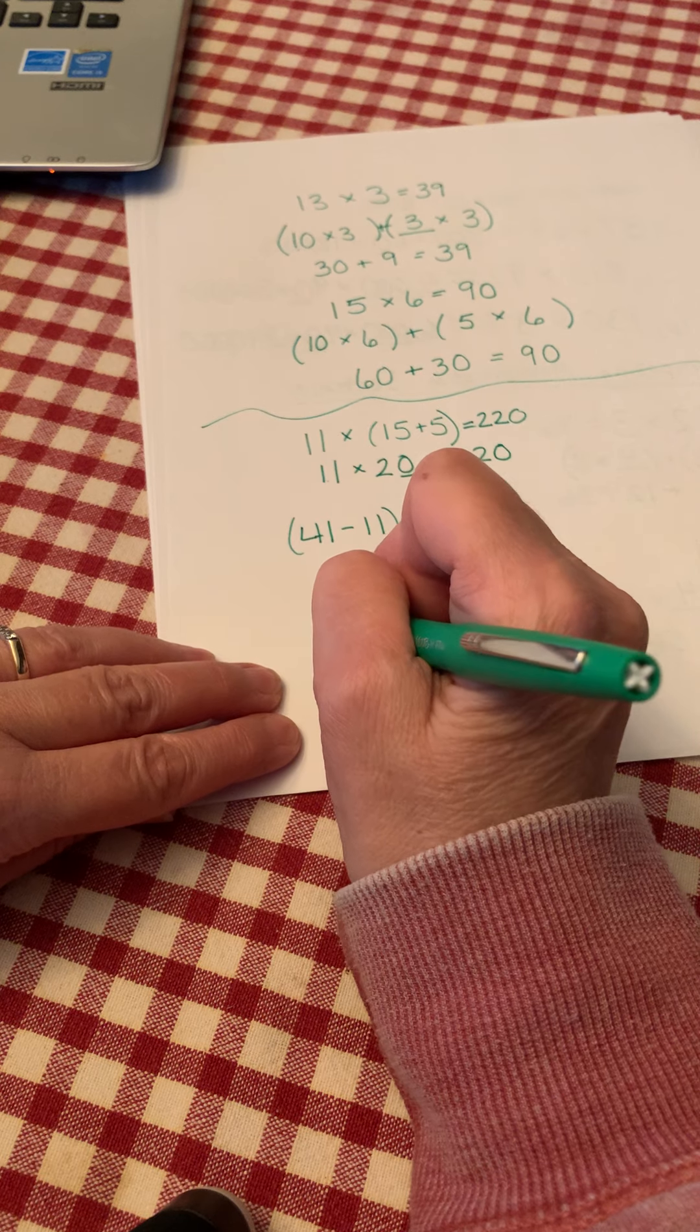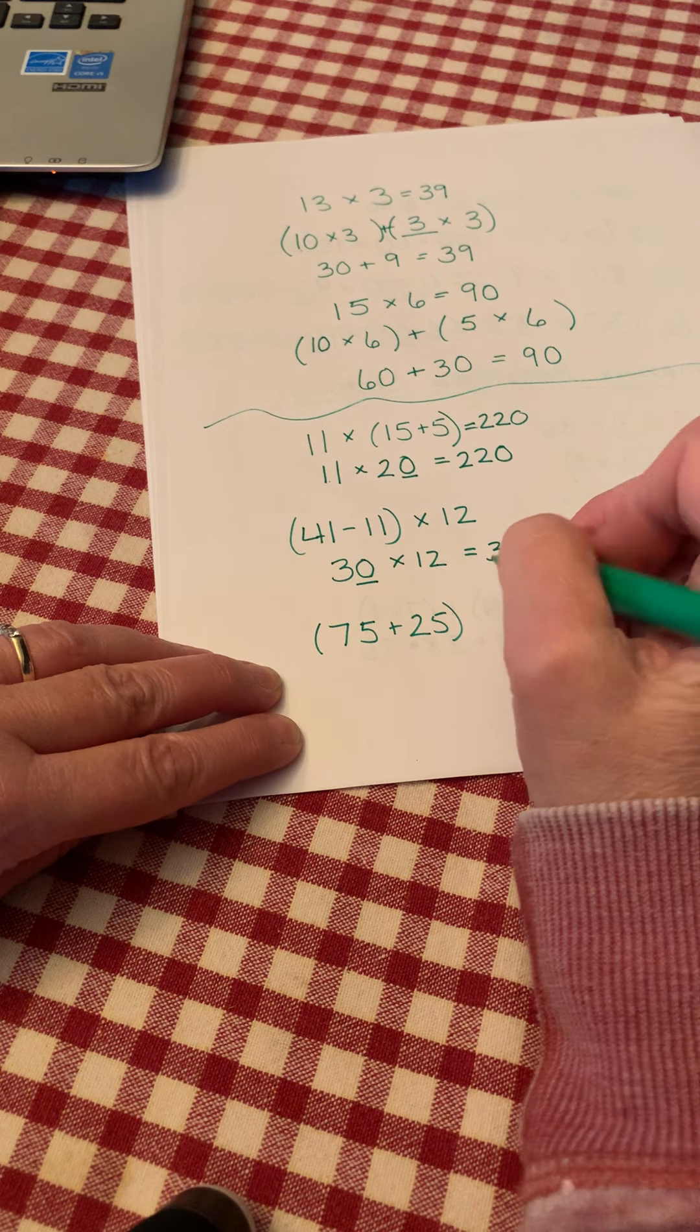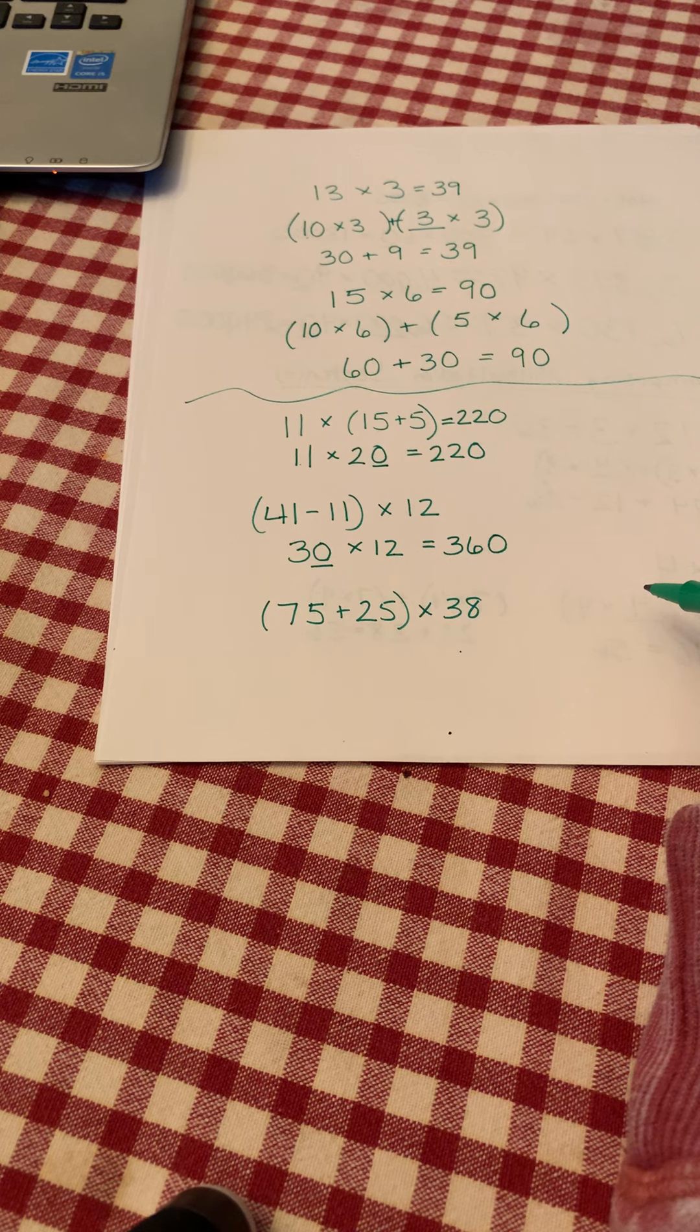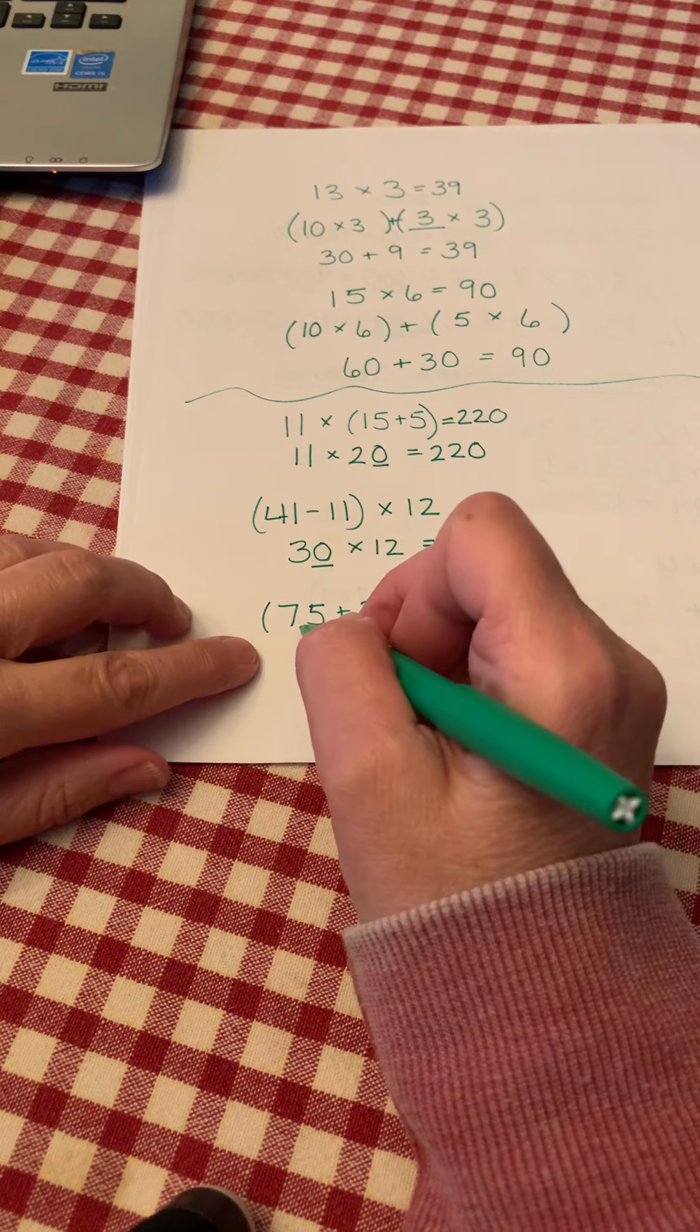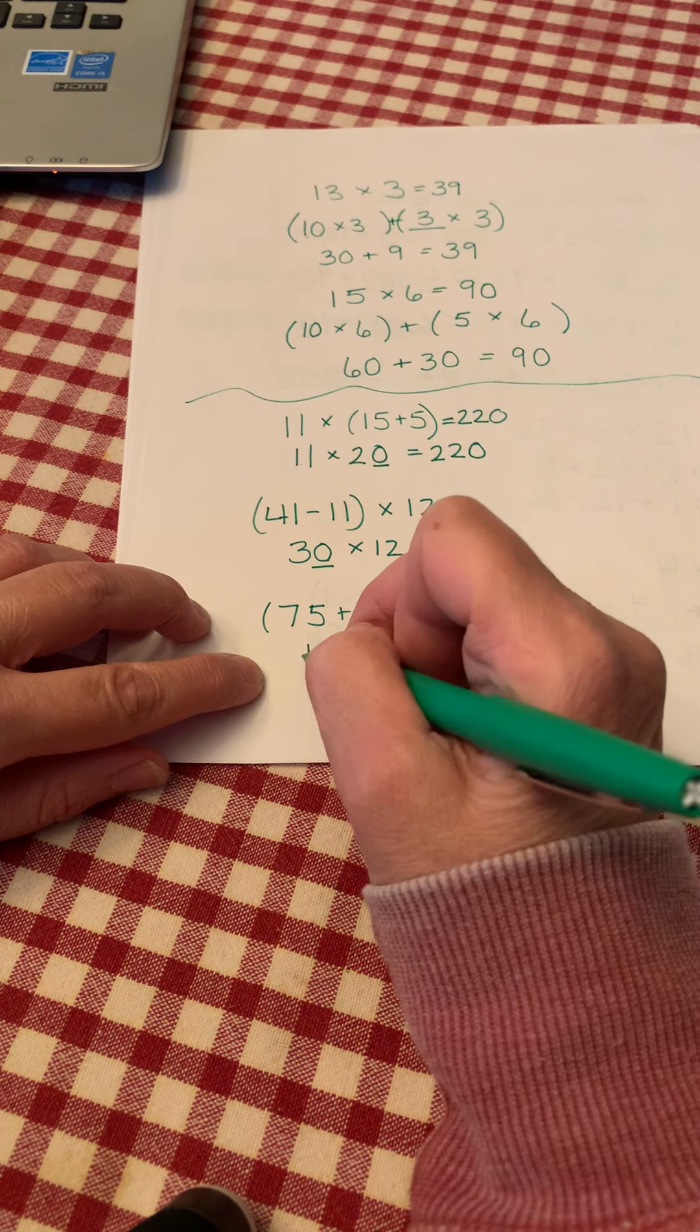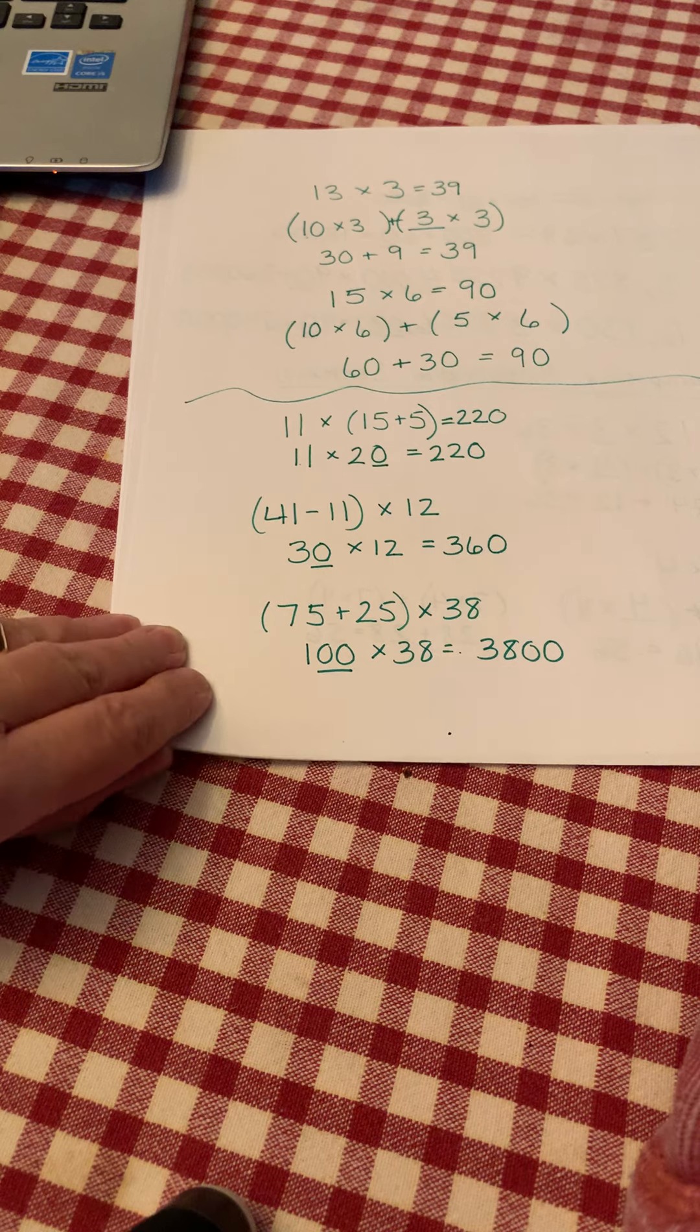All right, on your paper write 75 plus 25, the sum of 75 and 25, times 38. Press pause, solve this problem, and press play when you want to check your answer. Okay, 75 plus 25 is 100. 100 times 38, 1 times 38 is 38 times 100, two zeros, 3,800.